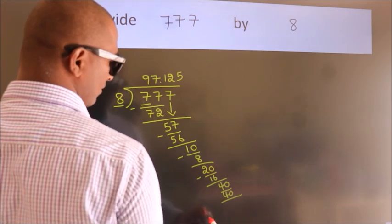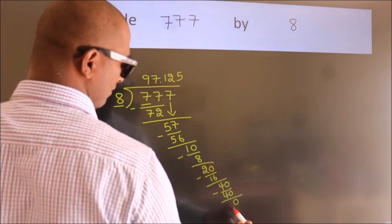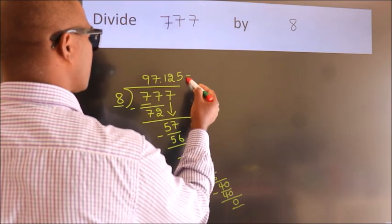Now we subtract. We get 0. Here we got remainder 0. So this is our quotient.